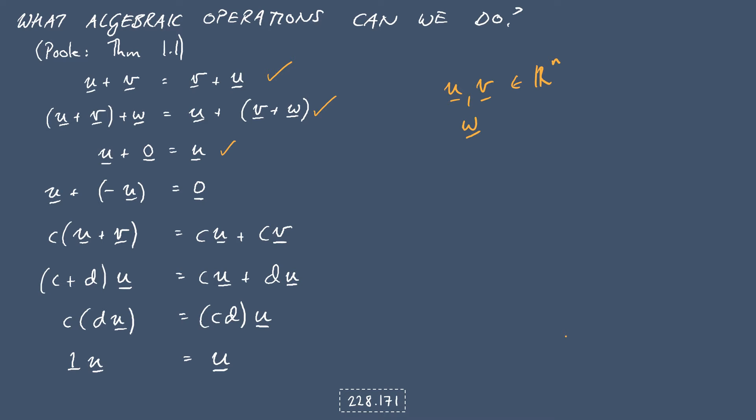So this is just like a sanity check, right? Everything is working the way that we imagine it would. u plus negative u gives us the 0 vector. If we have a scalar outside of a pair of brackets, parentheses, and we multiply u plus v by that scalar, then we can expand the bracket with that scalar, and it all works the way we'd hope.